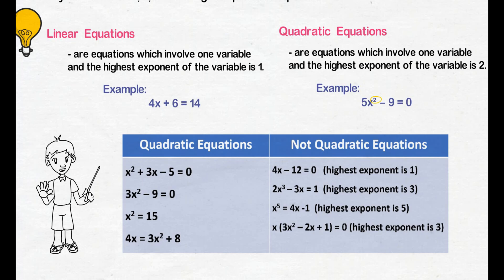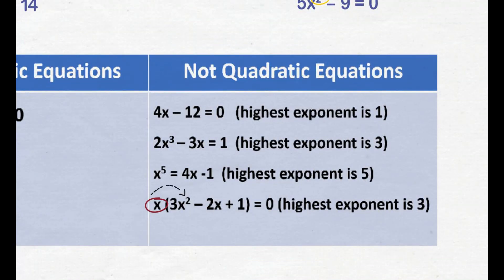If we multiply x to the expression 3x squared minus 2x plus 1, then x times 3x squared equals 3x cubed. So even though we see a squared term in the expression 3x squared, we still cannot consider it a quadratic equation since it has not been simplified yet. When identifying whether an equation is quadratic, we need to first check if the given equation is fully simplified.